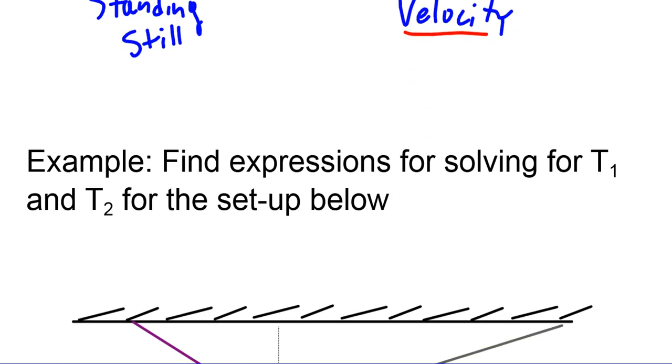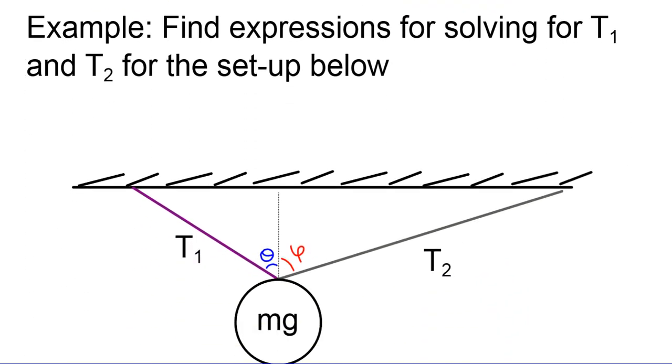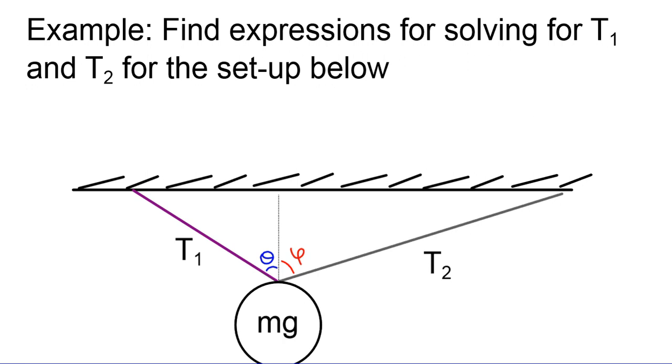So let's look at an example problem, a very general tension problem, where a weight is being held up by two strings. And utilizing Newton's first law, we're going to solve for the tension in each string. So we're going to find T1 and T2, so that's tension one and tension two, i.e. how hard each string is pulling up to hold up that weight.